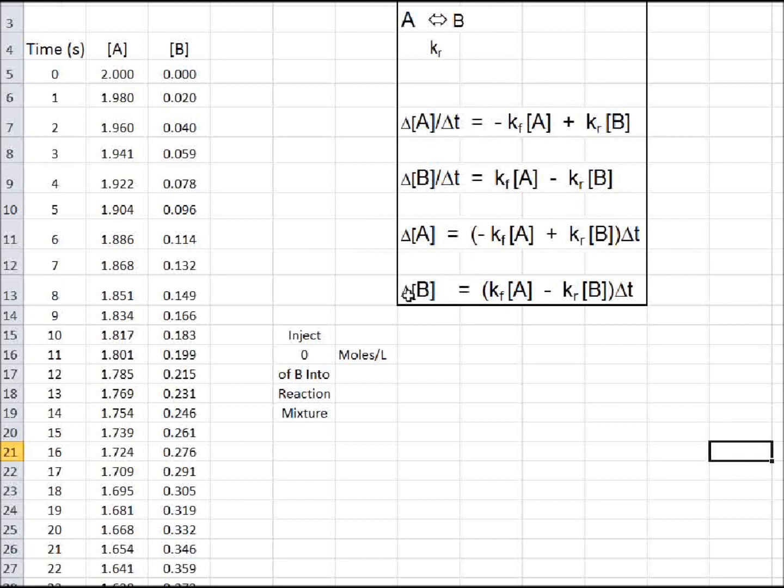In a similar way, the change in the concentration of B after each second will equal Kf times the concentration of A, minus Kr times the concentration of B. These two terms are equal but opposite in sign.